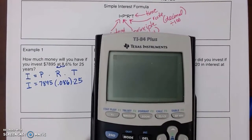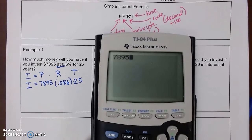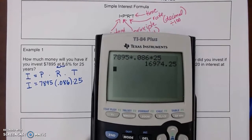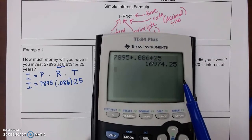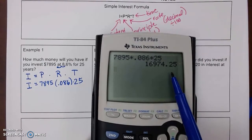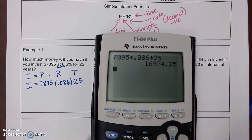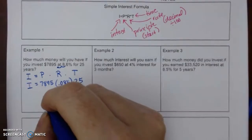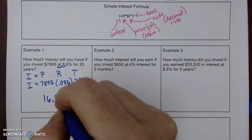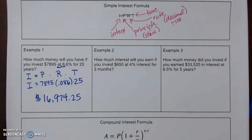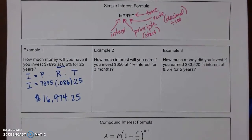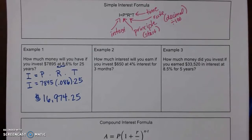Alright, I've got 78.95 times 0.086 times 25. Now, this is already in two decimal places since it's money. If it wasn't, then you would round it to two decimal places, but that works.